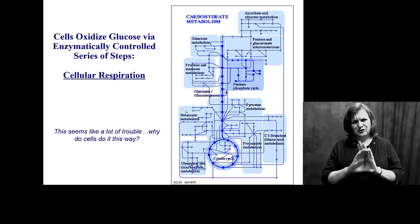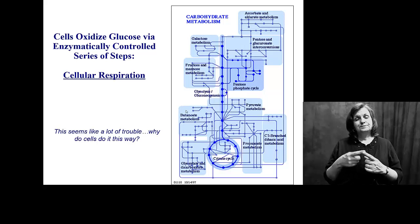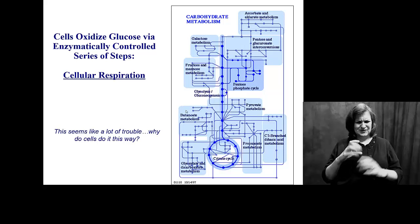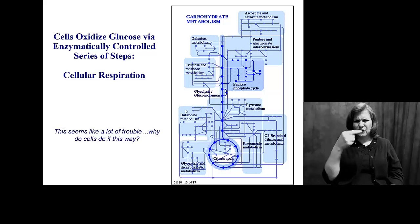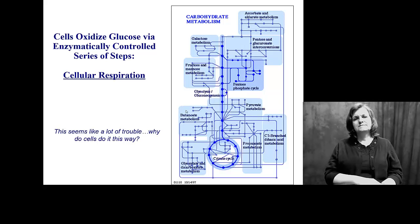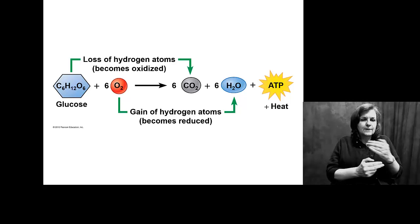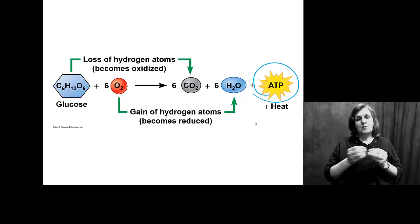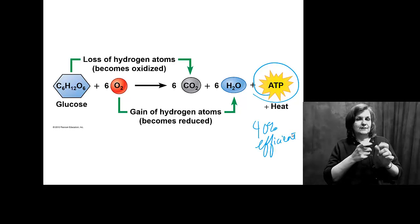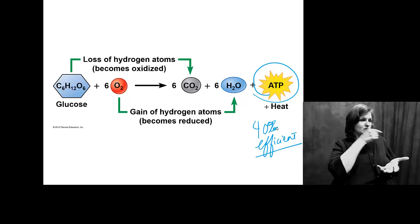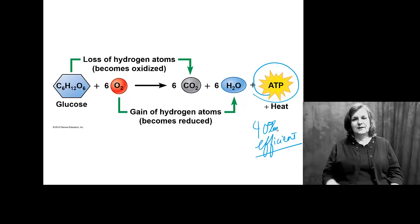Now please do not try to memorize this. But what we need to look at and what we need to think about is why would your cell go through all of this mess for glucose? And the idea is this slow methodic process allows us to be much more efficient. You are about 40% efficient, we said before. So you get about 40% of the energy out of glucose that's there. That's amazing.